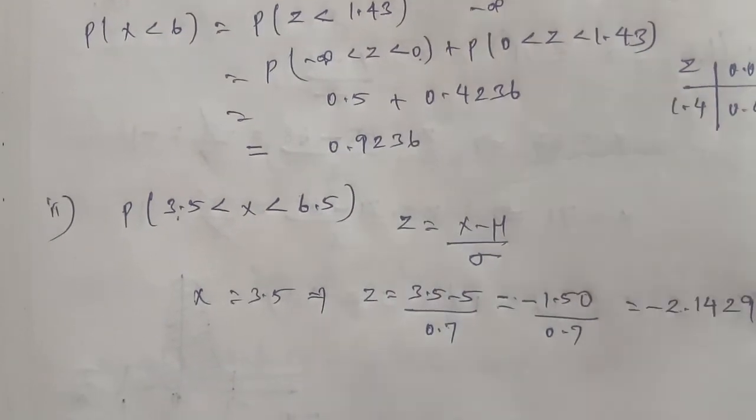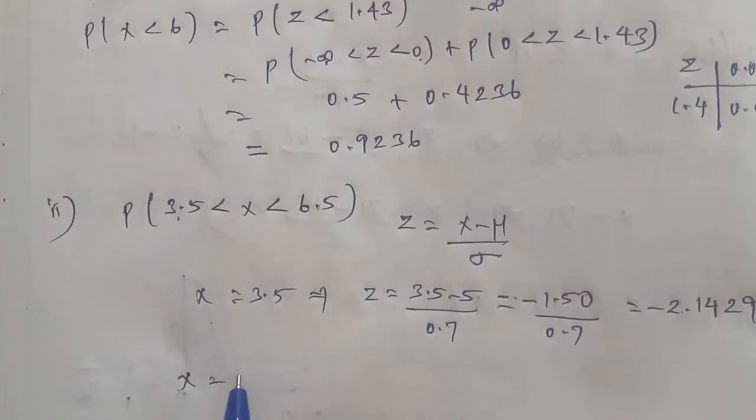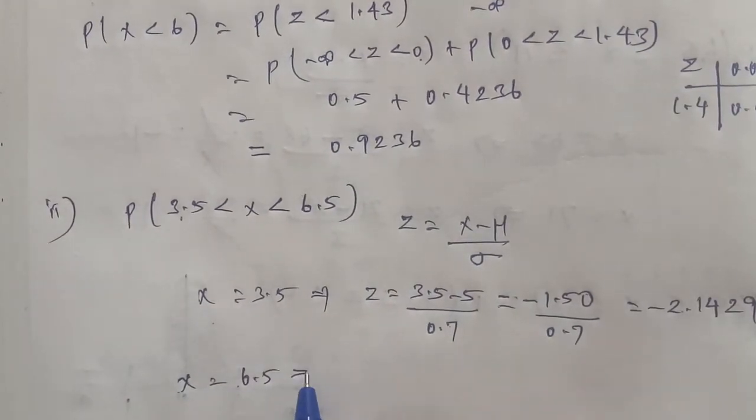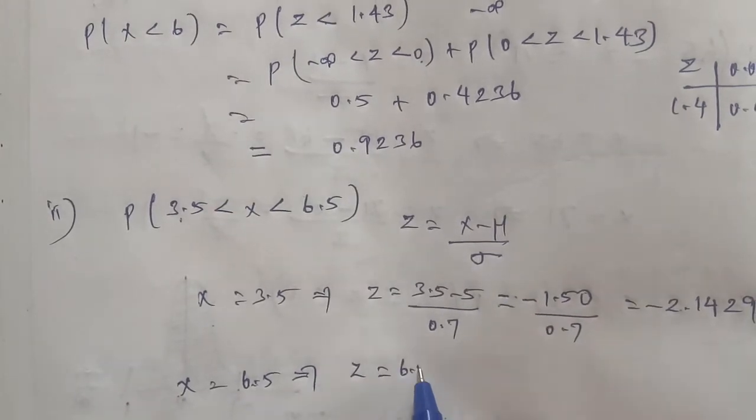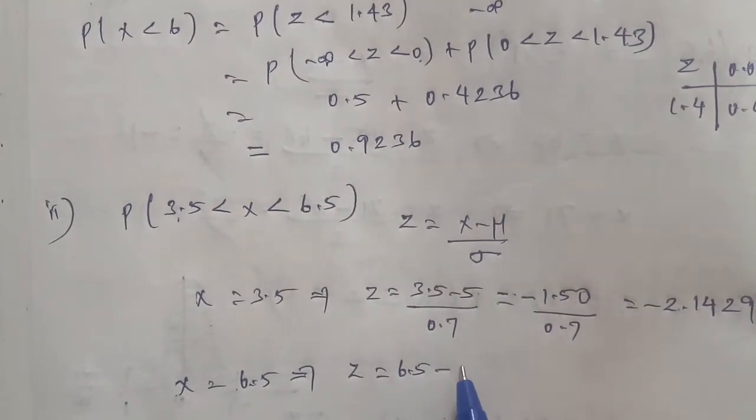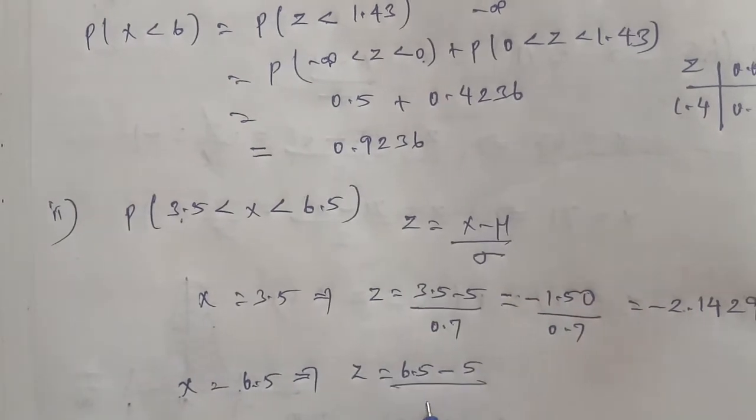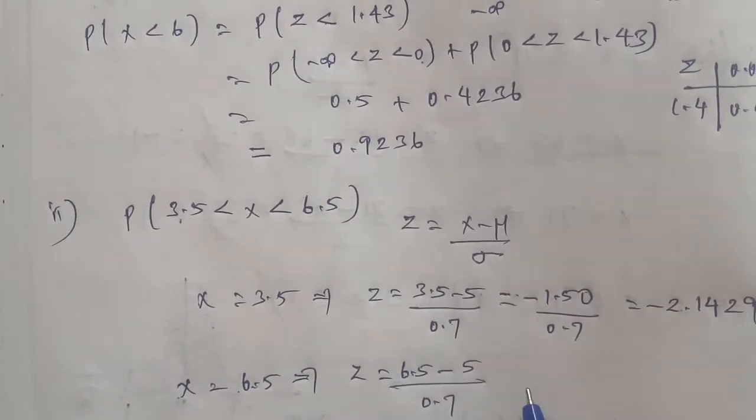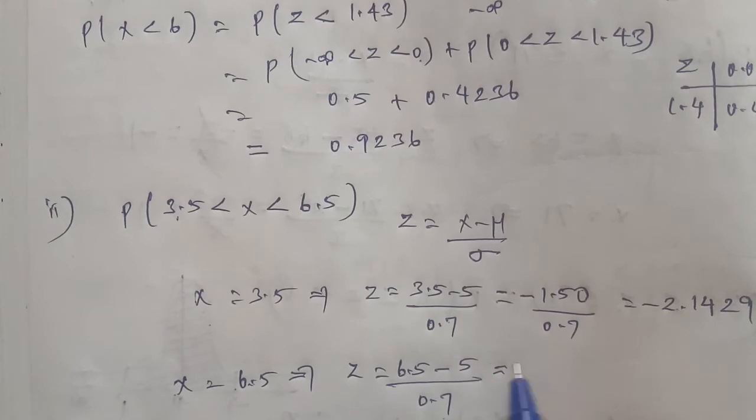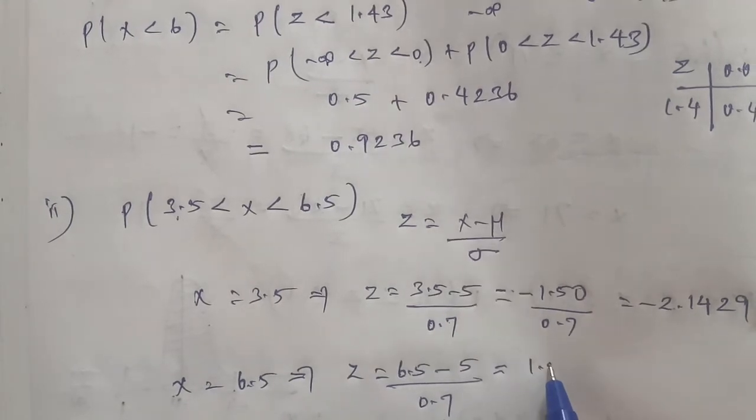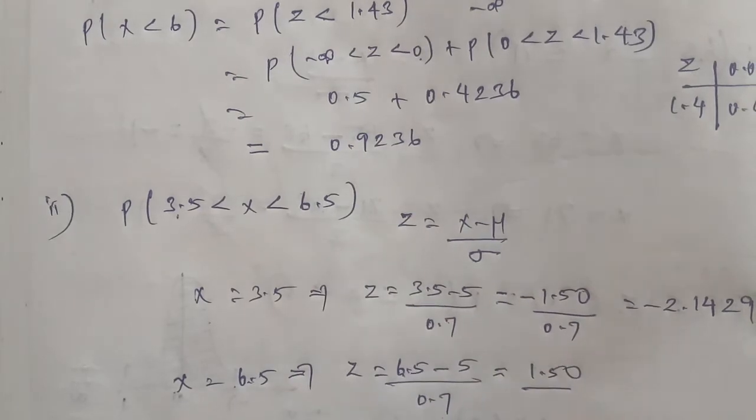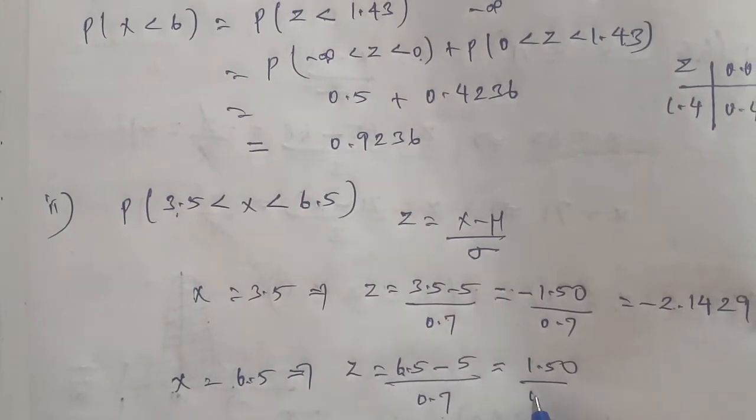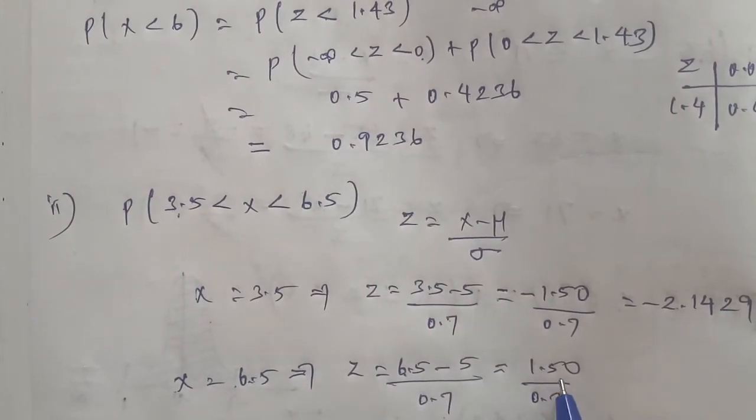For X = 6.5, we calculate Z = (6.5 - μ) / σ. The X value is 6.5, new value is 5, and sigma value is 0.7. Again, we have 6.5 minus 5 equals positive 1.50, divided by 0.7.